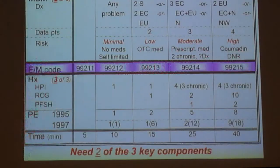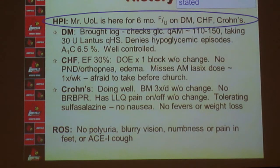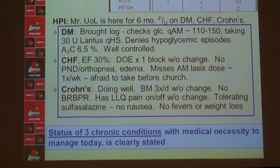What level of service did I provide? Looking at the documentation criteria piecemeal: every visit needs a clearly stated, acceptable chief complaint — not just 'follow-up' but specifying the conditions. For the HPI, documenting the status of his three chronic conditions satisfies Level 4 and Level 5 HPI criteria. For review of systems, we addressed endocrine, pulmonary, cardiac, GI, constitutional, neuro, musculoskeletal, and ophthalmologic systems — all medically necessary.